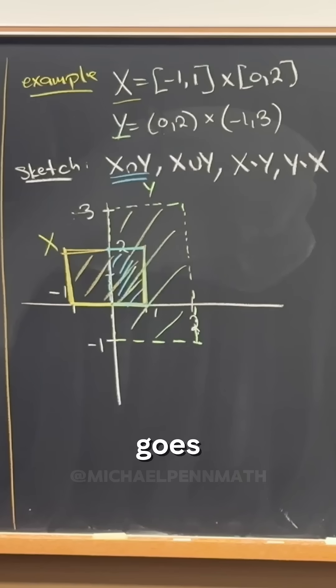The union, it kind of goes without saying, it's just everything that's shaded. You would just maybe turn off your color vision, see it in black and white, and then it would be everything that you see shaded in black and white.